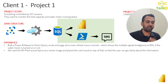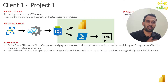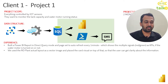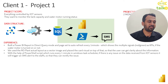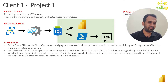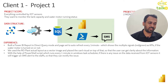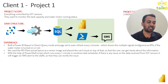In Power BI, the report is built in directory mode with page setup set to refresh every one minute. It shows multiple signals — green or red as KPIs — indicating whether the water motor is on or off. We used the actual plant layout as a vector image placed on the report canvas so users get clarity. With the PowerShell script running every one minute in Windows Task Scheduler, if there are any issues in the data received from the IoT sensor, it triggers an SMS alert to the staff so they can rectify the issues.